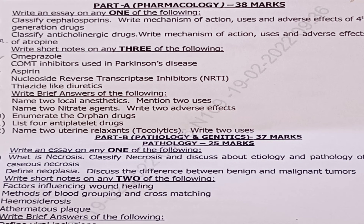Short notes — out of five answer any three: Question 3: omeprazole. Question 4: COMT inhibitors used in Parkinson's disease. Question 5: aspirin. Question 6: nucleoside reverse transcriptase inhibitors. Question 7: thiazide-like diuretics. Brief answers — answer all five, 2 marks each: Question 8: name two local anesthetics and mention two uses. Question 9: name two nitrate agents and write their adverse effects. Question 10: enumerate the opiate drugs. Question 11: list four anti-platelet drugs. Question 12: name two uterine relaxants (tocolytics) and write their uses.